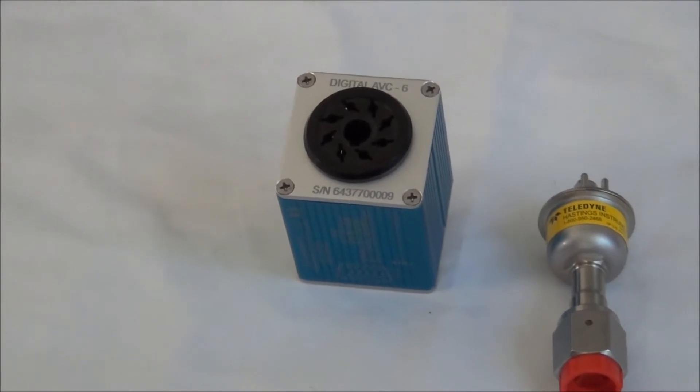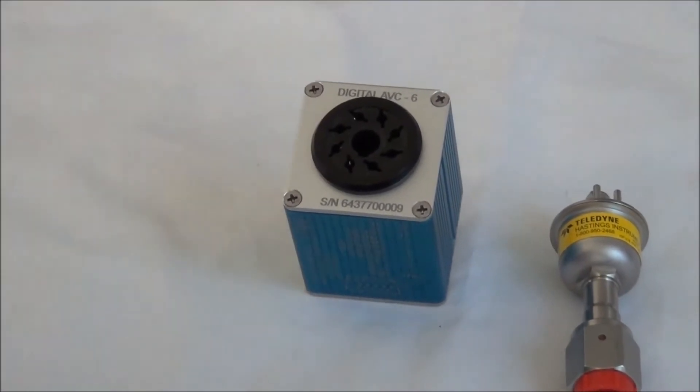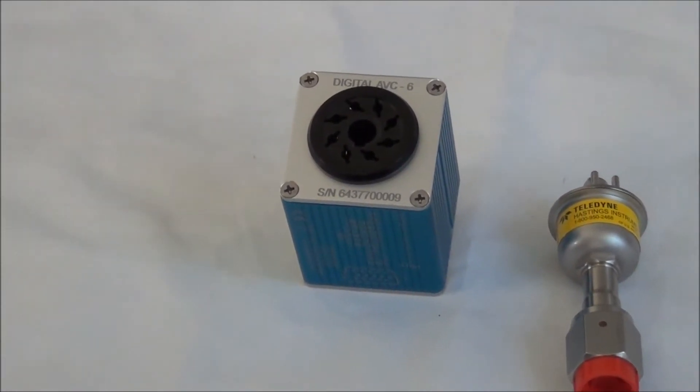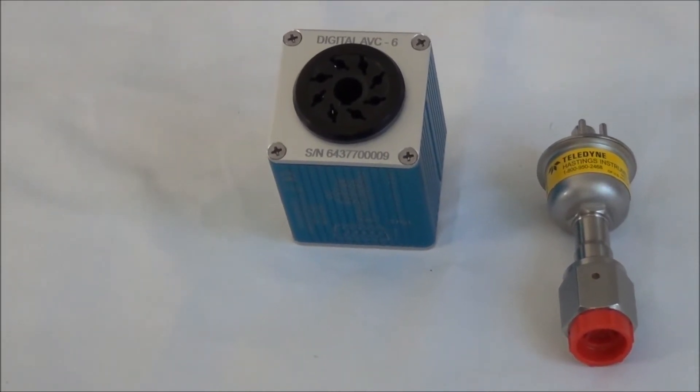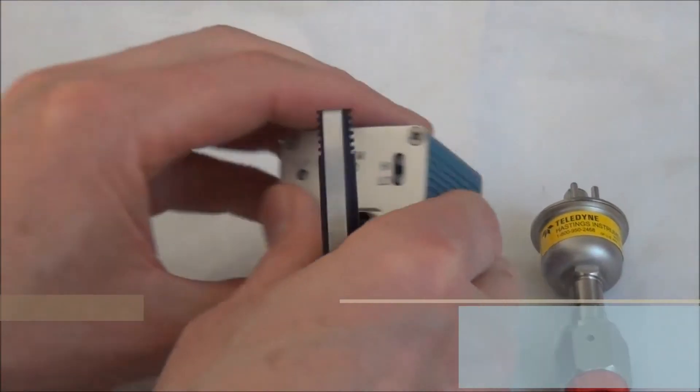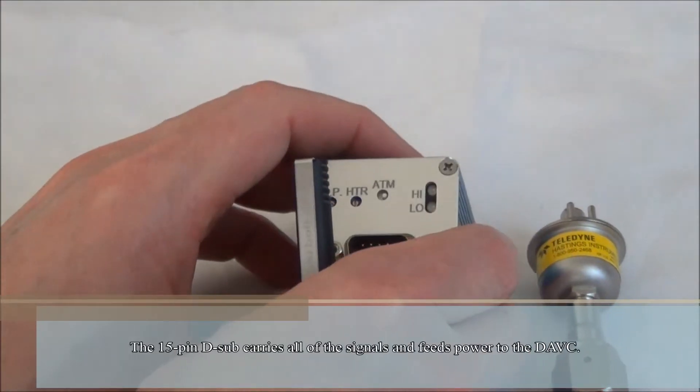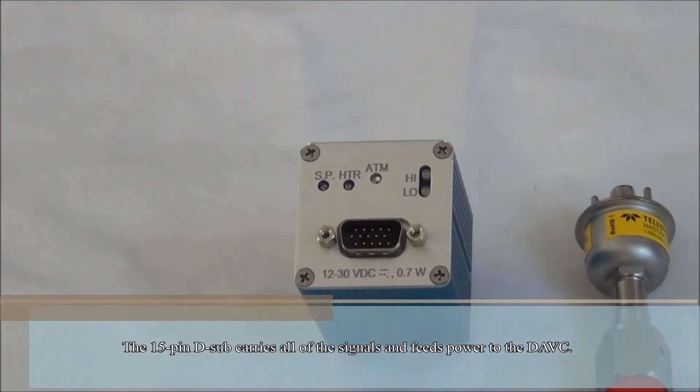The factory configuration of the DAVC is given by the marking on the base plate. This particular unit is set up for the DB6 family of thermocouple gauge tubes. The 15-pin D-sub carries all the signals and feeds power to the DAVC.